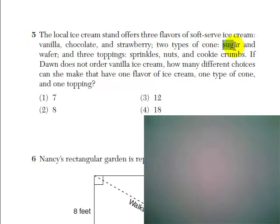Two types of cone, sugar and wafer, and three toppings: sprinkles, nuts, and cookie crumbs.